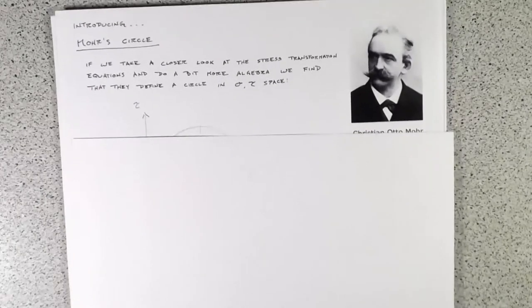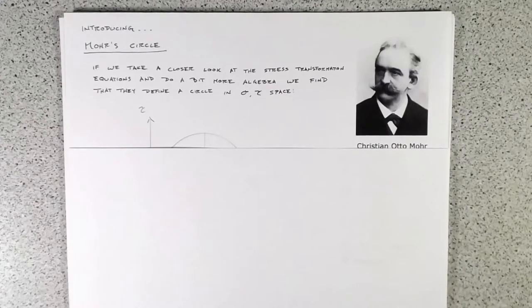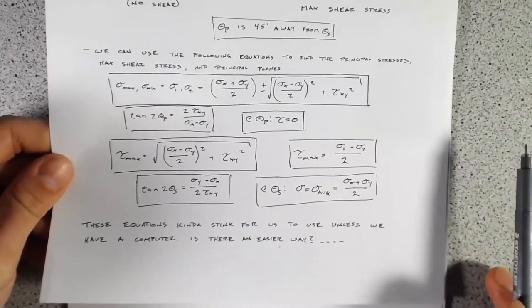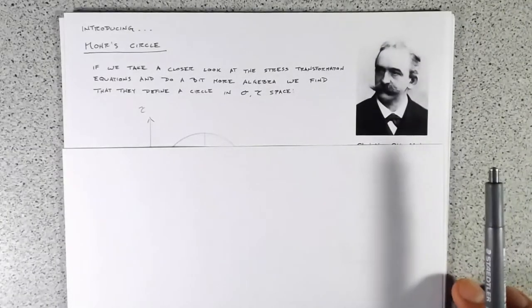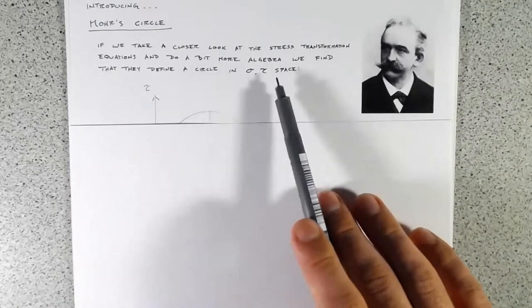And it's called Mohr's circle. Mohr's circle was developed by Christian Otto Mohr, a German engineer in the 19th century. They didn't have computers in the 1800s, so he came up with this. If you look at all of these equations and do a bit more algebra and rearranging, you find out that they describe a circle in sigma-tau space.